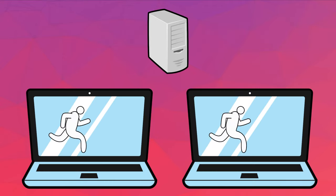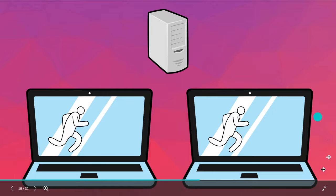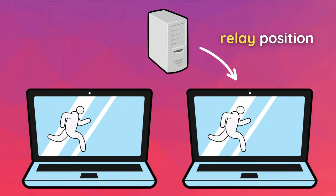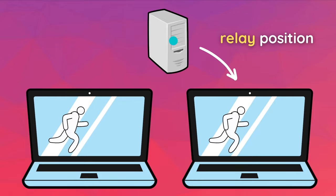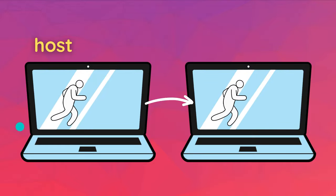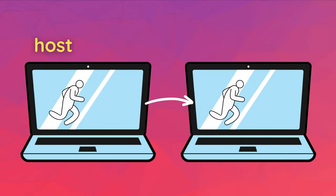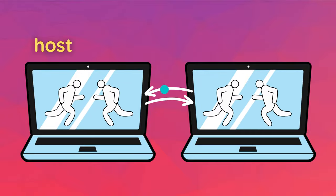Let's do a simple example. Imagine two people playing a game — two clients and a server. How does one client communicate to the other that their character is moving position? We send the position to the server, and the server relays the position to the other client — the server acts like a middleman. With a host instead, since it's both the server and the client, you can send the position directly from the host to the other client and vice versa — this is more of a peer-to-peer architecture.